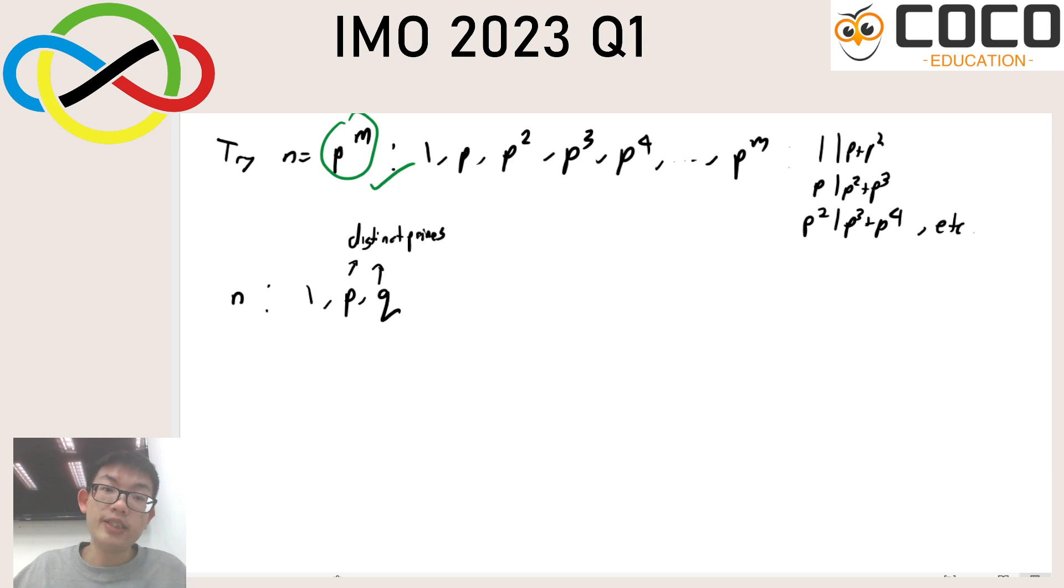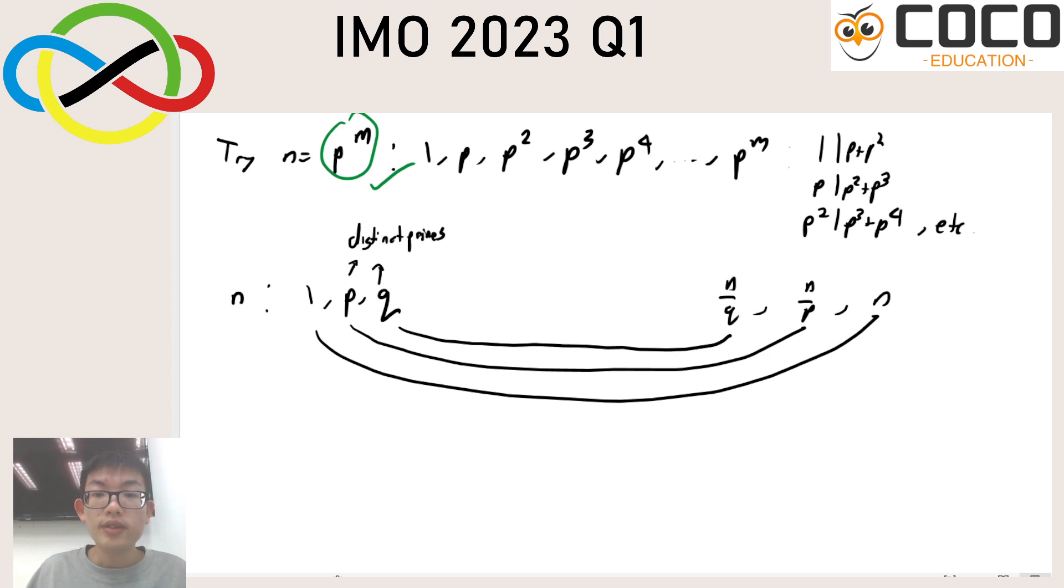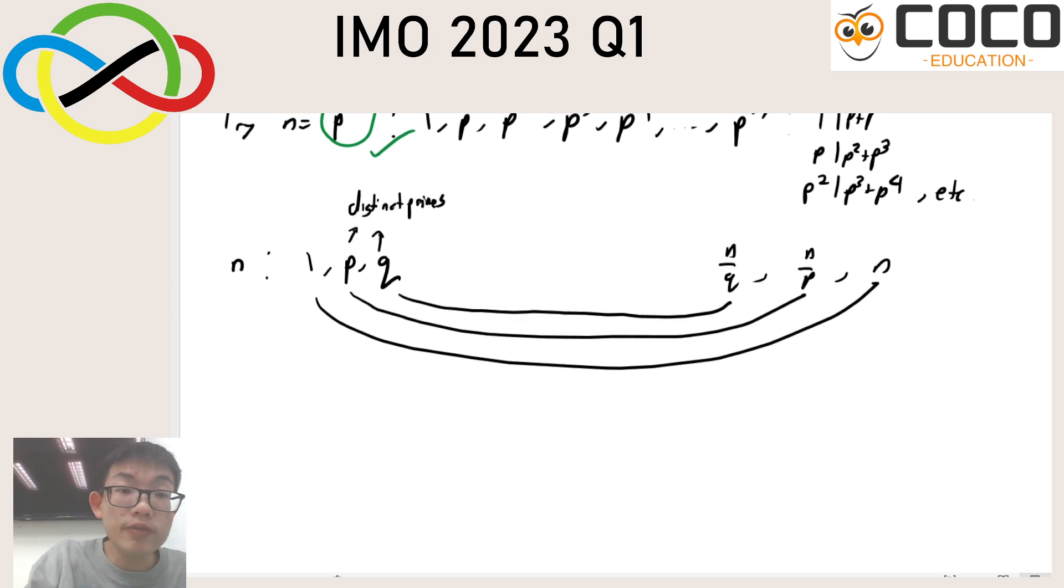But the thing about factors is that we know they come in pairs, which means that at the other end, you're going to get n over p and n over q as the two largest factors other than n itself. So our question is, I don't see any problem with 1 being a factor. Is there a problem with n over q being a factor of n over p plus n?